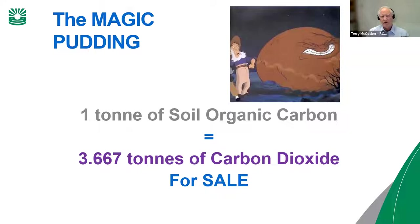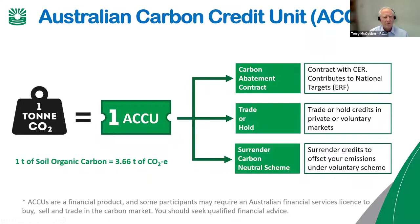It's this multiplier that actually makes it work, because the rate of sequestration of soil carbon is very slow, and if we were paid on the basis of the carbon itself it probably wouldn't be worth it. This is the only multiplier I'm aware of in agriculture that works in your favor. One ton of CO2 equals one ACU — one Australian Carbon Credit Unit.